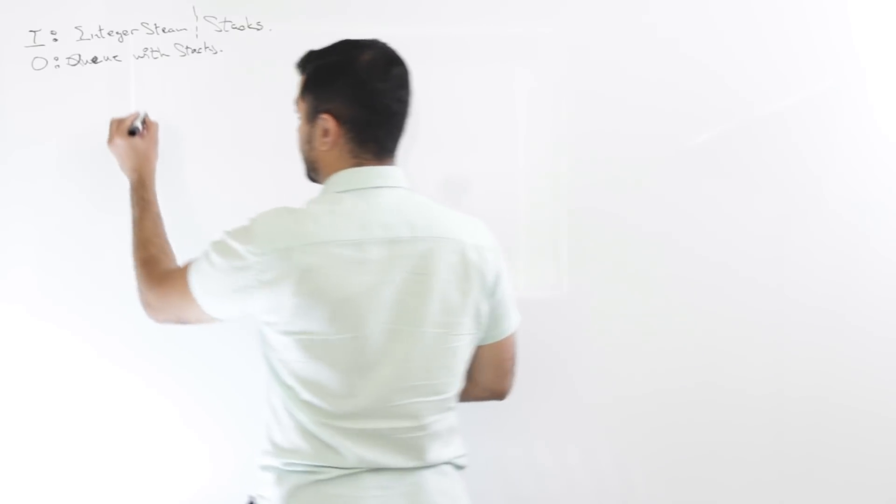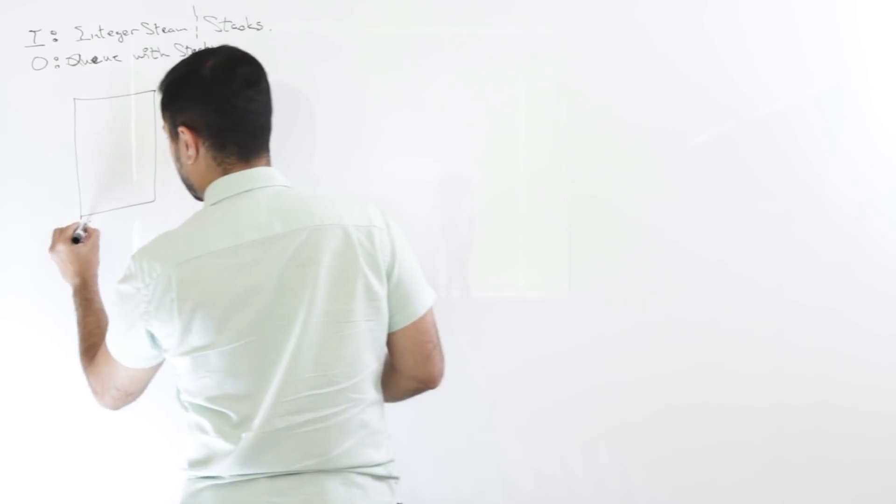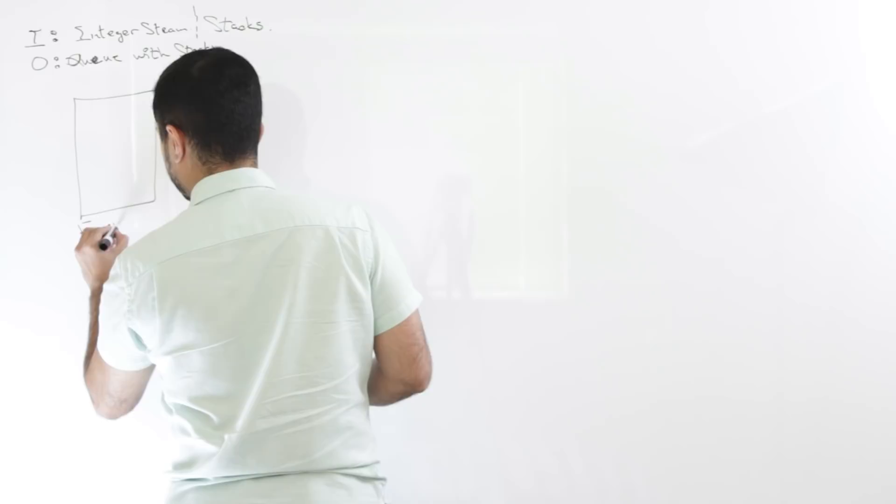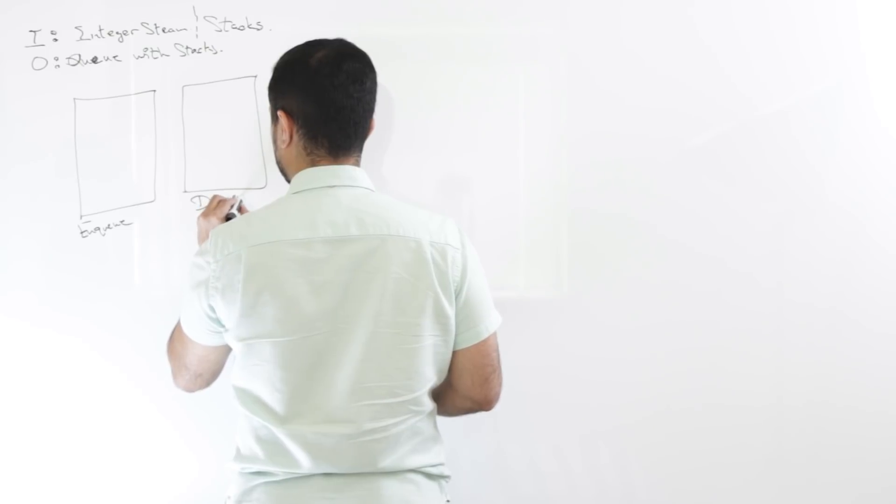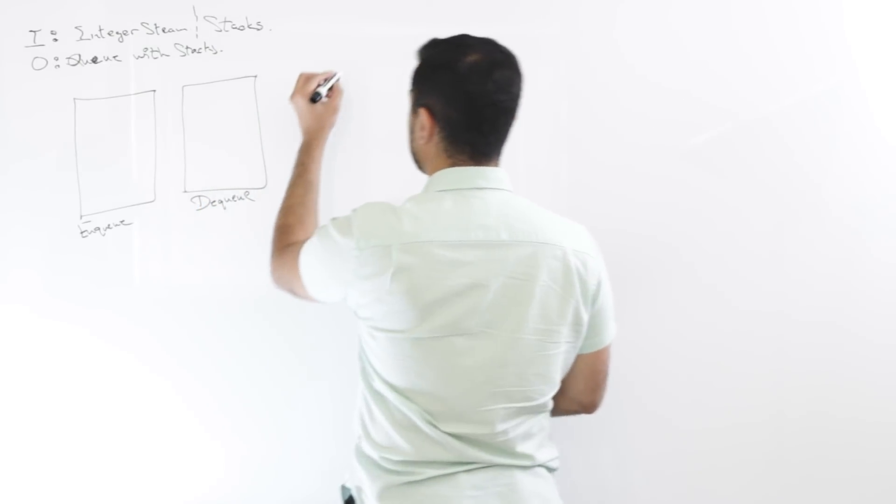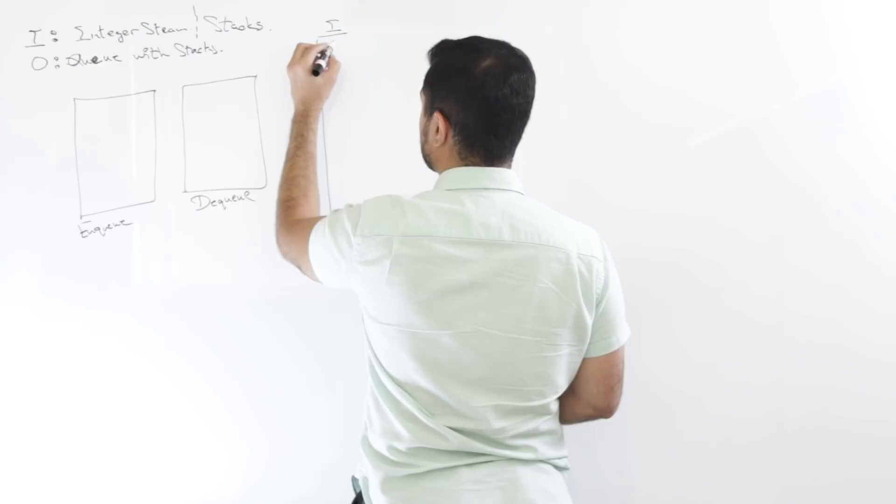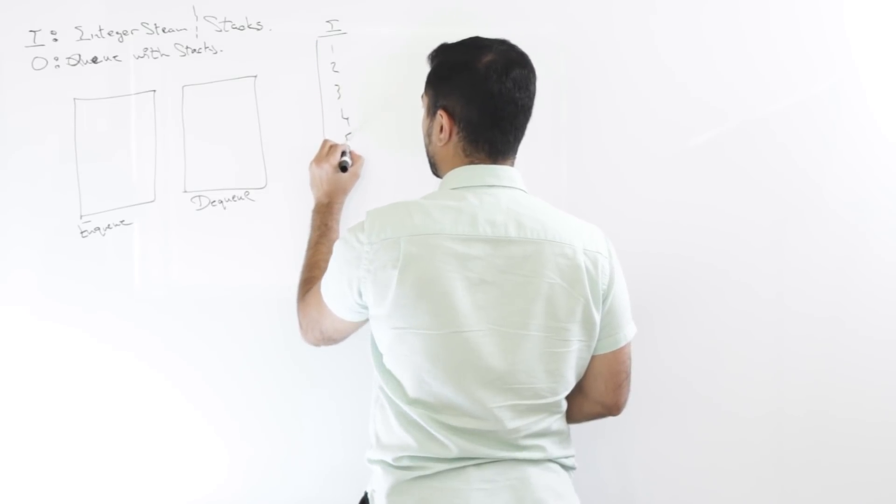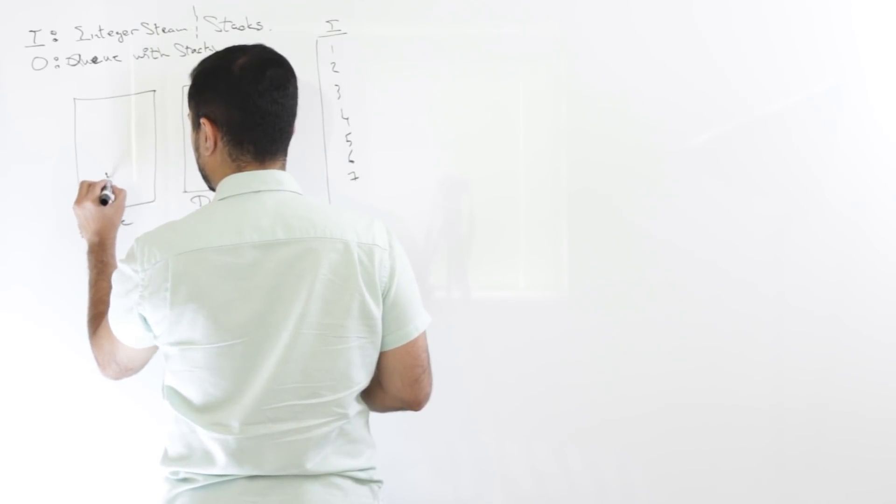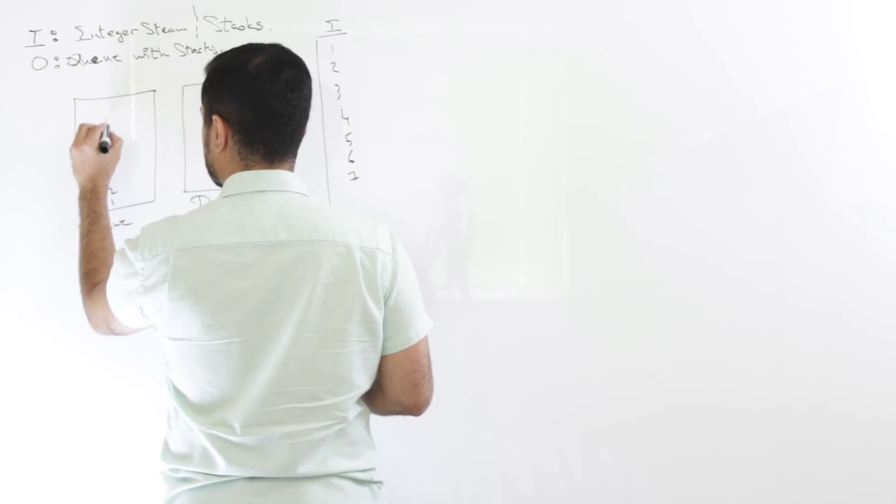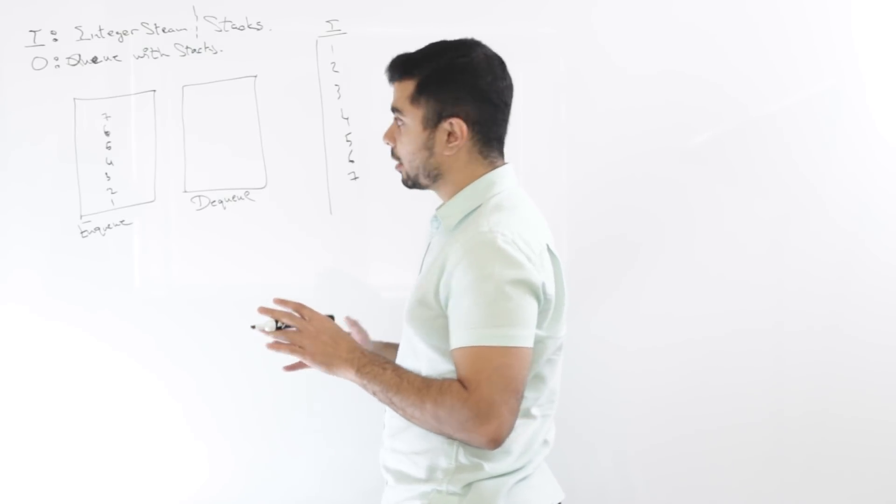So the way I would do this is I'll have one stack as an enqueue stack and another stack as a dequeue stack. So in this case, any time, let's say this is the input stream, I for inputs, and I'm inputting 1, 2, 3, 4, 5, 6, 7, let's say in a row, no dequeue yet. So it'll be 1, 2, 3, 4, 5, 6, and 7. So basically you are just pushing to the enqueue stack.